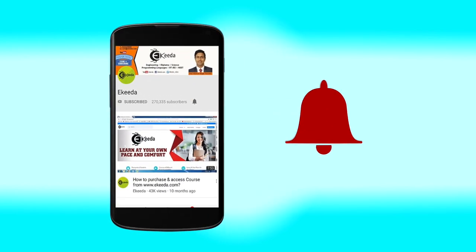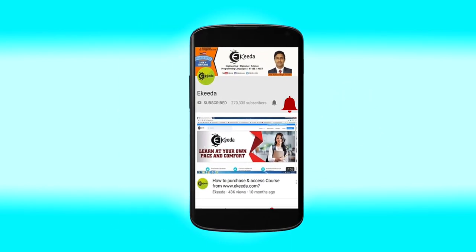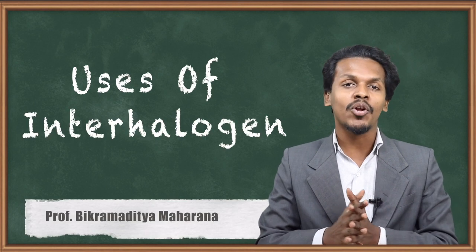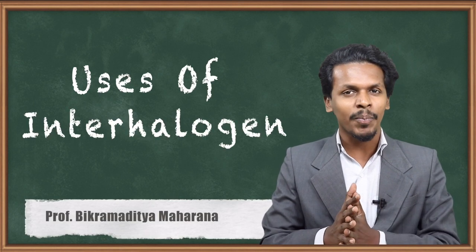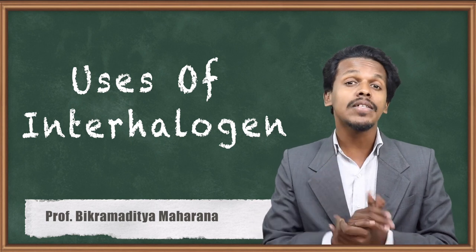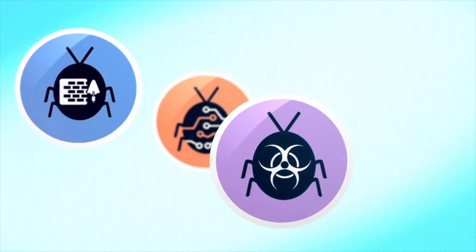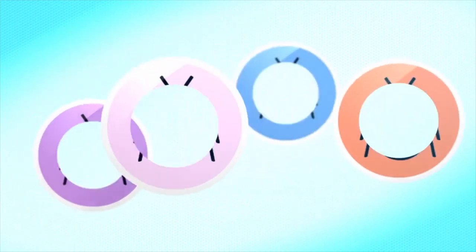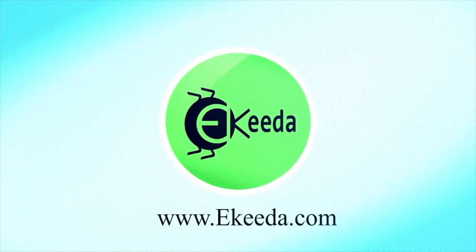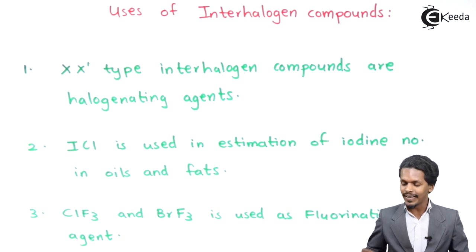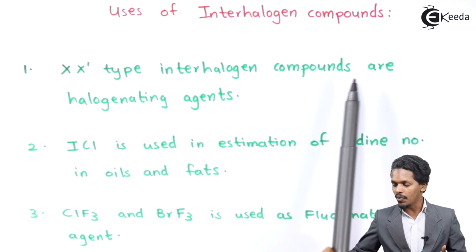In the previous topic we discussed the preparation of interhalogen compounds. Now in this topic we are going to talk about the uses of interhalogen compounds. Starting with the first one: XX-type interhalogen compounds are basically used as halogenating agents.